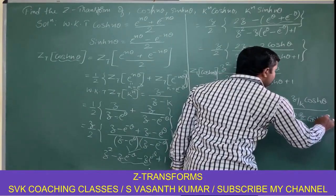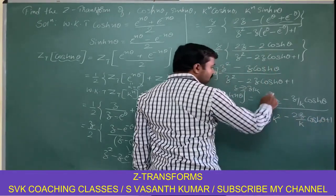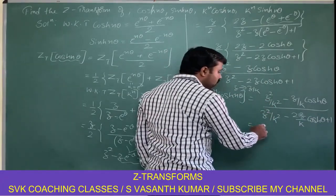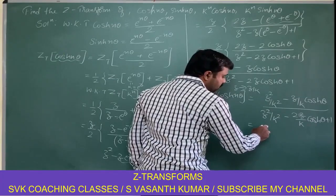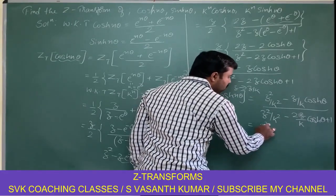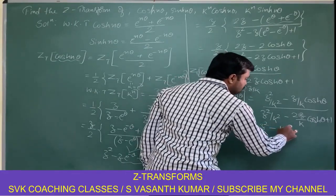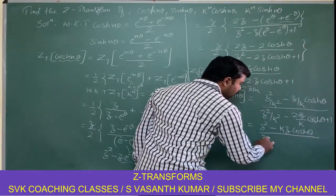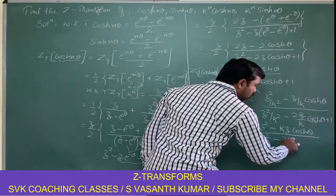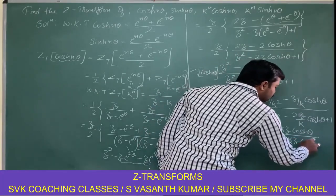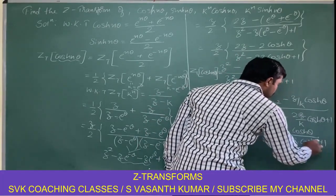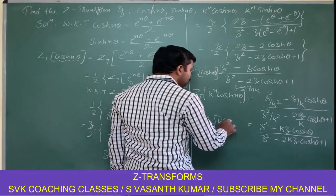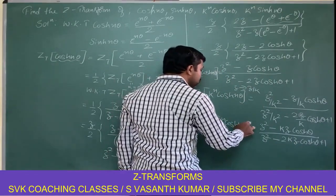To find the Z transform of k power n cosh(nθ), just replace z by z/k in the above expression. Multiplying both numerator and denominator by k squared, we get z squared minus kz cosh(θ) all divided by z squared minus 2kz cosh(θ) plus k squared. This is the required Z transform of k power n cosh(nθ).